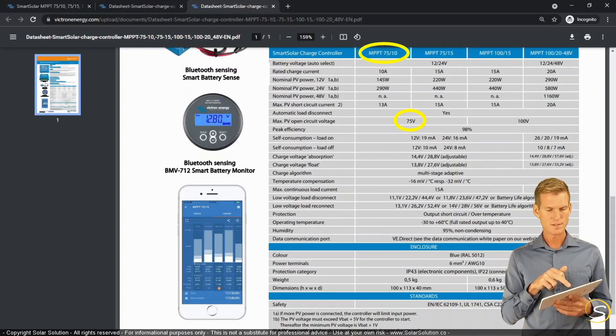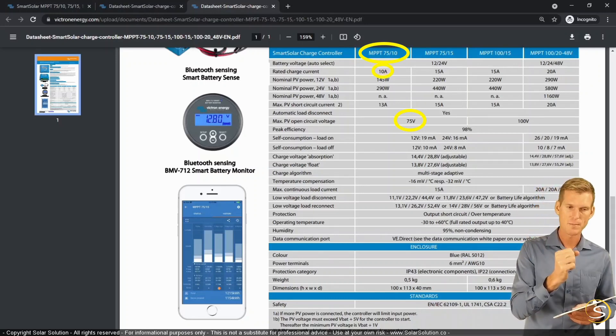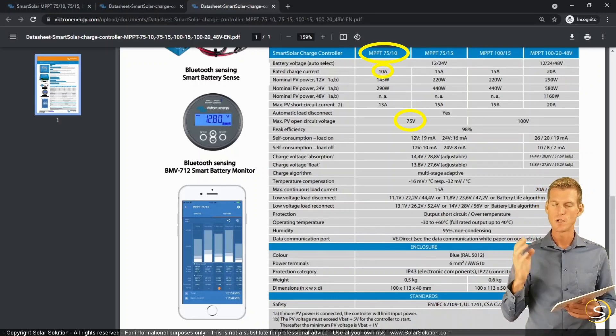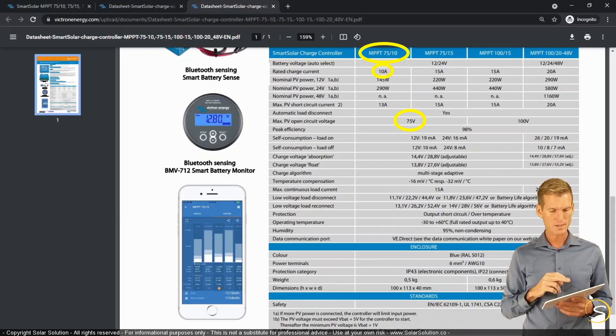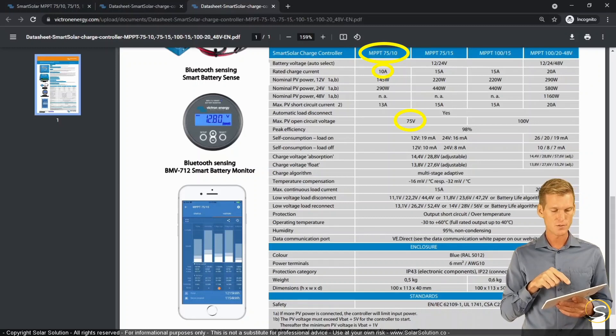Now you understand where the 75 and the 10 comes from. So 75 is the maximum open circuit voltage of your PV array. And 10 amps is the maximum amount of amps from the solar charge controller towards the load, towards the battery.